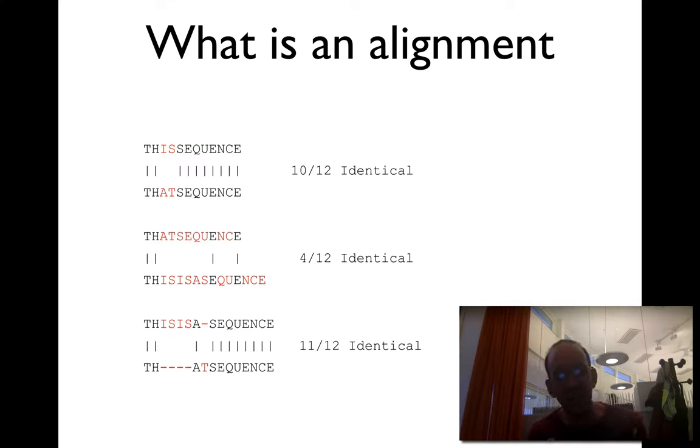But if you would allow gaps, if you would allow insertions, deletions, or whatever you call it, you could align these two sequences like in the third example. 'This is' aligns to 'th', they have a gap, 'is is', they align to gaps, they have an 'a', they have a 't' that aligns to a gap from another sequence. And they have 'sequence' to 'sequence'. So you get 11 out of 12 residues in the shorter sequence that are identical. So that intuitively would be a much better alignment. They're all alignments, and unless you set up some rules, we don't know what is best or what is good. But our intuition would say that the last alignment is better than the second one.